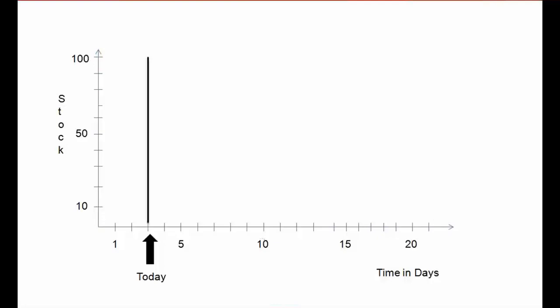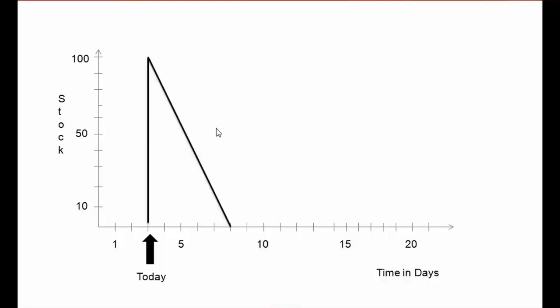On the horizontal axis you can see days — time in days. Today we have 100 pieces of stock. If I am using 20 bags of cement every day, in the next 5 days I will consume all 100 pieces of stock. Then I will fulfill the stock again with 100 pieces, and again in the next 5 days I will consume all the stock. This process will continue.